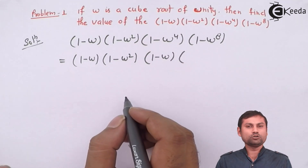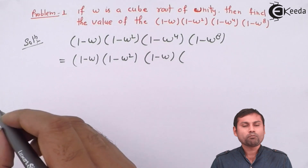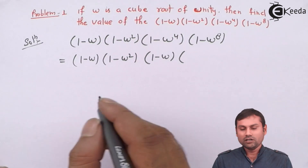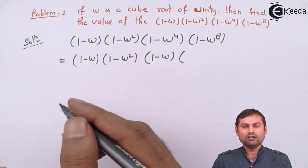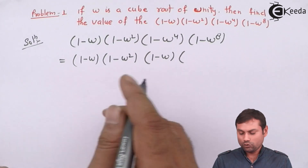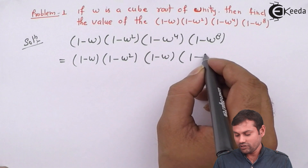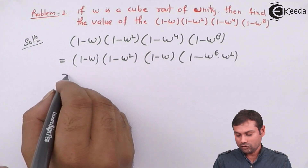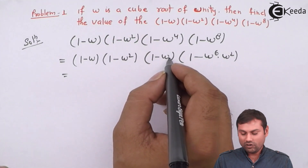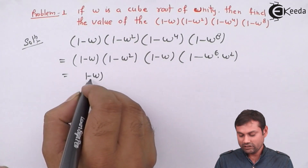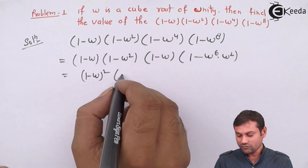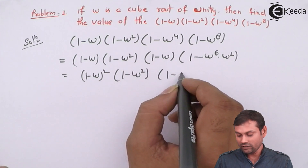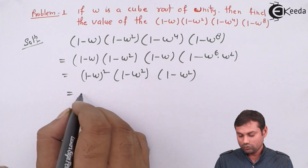(1-omega to the power 8): we can write omega to the 8 as omega to the 6 times omega squared. Since omega to the 6 equals 1, this becomes (1-omega squared). So our expression becomes (1-omega)(1-omega squared)(1-omega)(1-omega squared), which equals (1-omega) squared times (1-omega squared) squared.